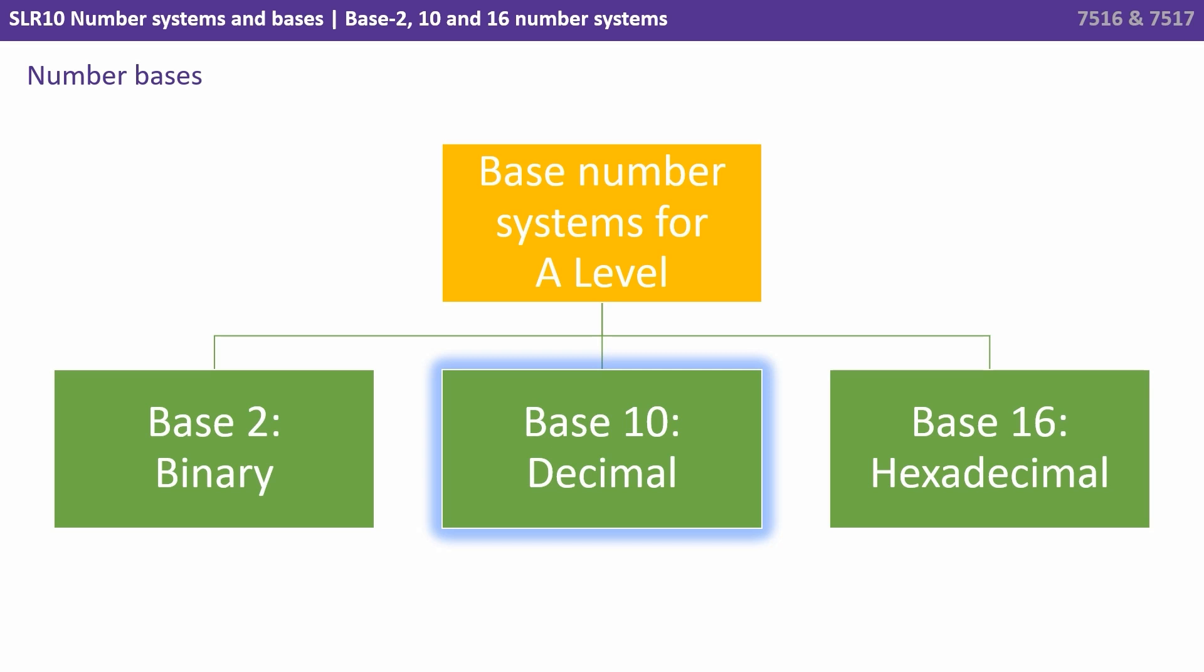At A-level you need to be aware of three different base number systems: base 2 binary, base 10 decimal or sometimes called denary, and base 16 hexadecimal.